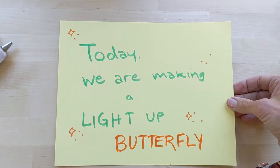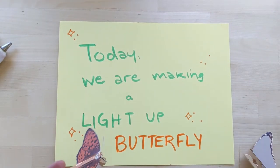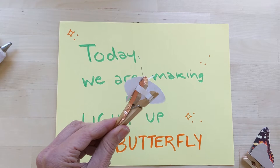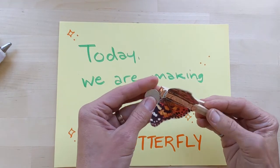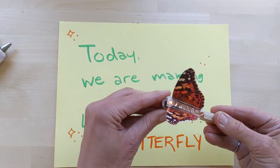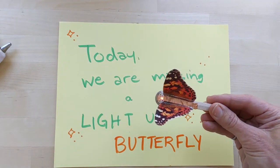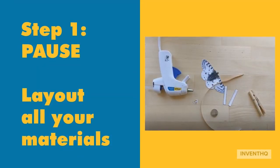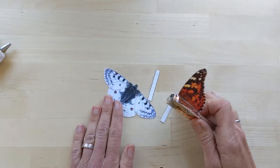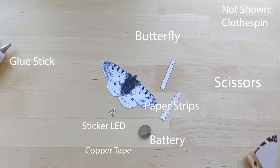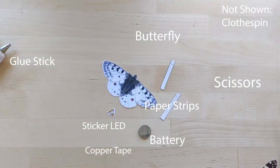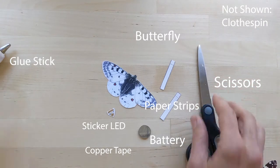How to make a light up butterfly that also flaps and lights up with a battery. First of all, you're going to need some supplies: battery, LED, copper tape, pair of scissors, a hot glue gun, and your clothespin.